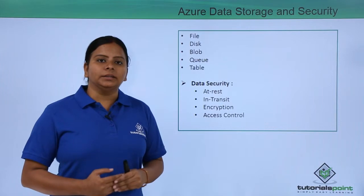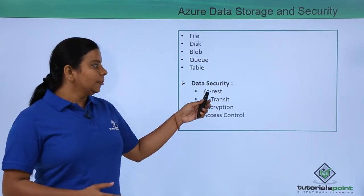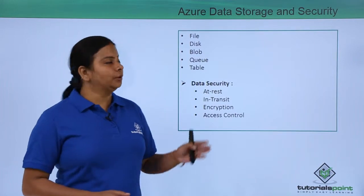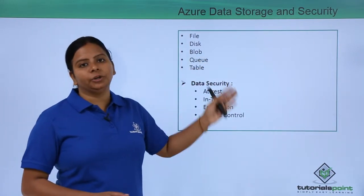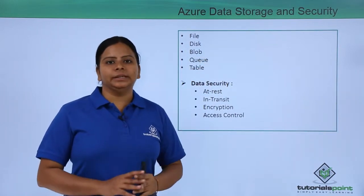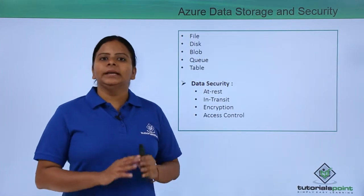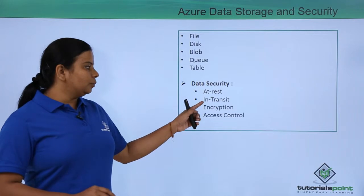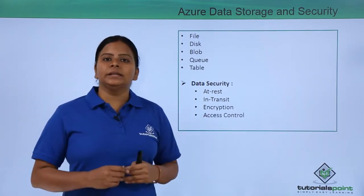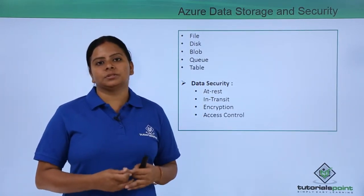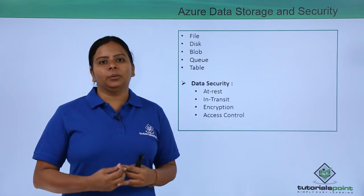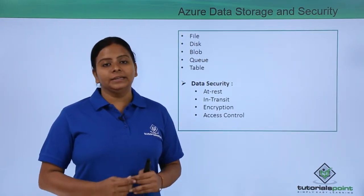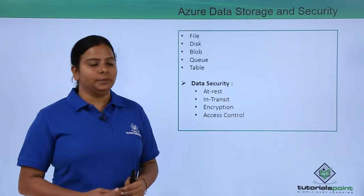We are going to provide data security when the data is at rest. For example, in your blob storage or queue storage, if you just store the data and are not going to retrieve it, it is at rest and you can provide security to it. Same way, we can provide security when the data is in transition — if users are accessing the data frequently and you still want to provide security, you can apply in-transition security to your database.